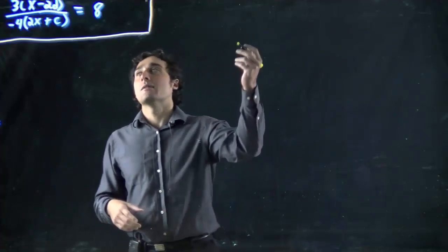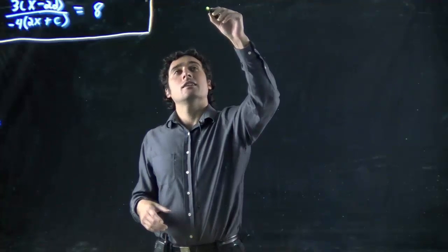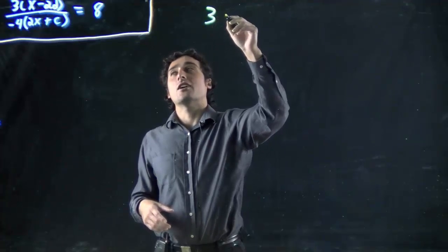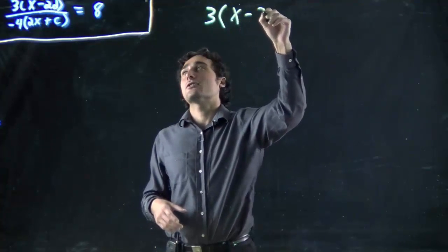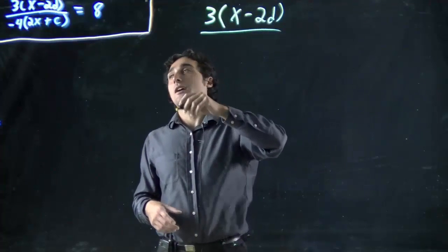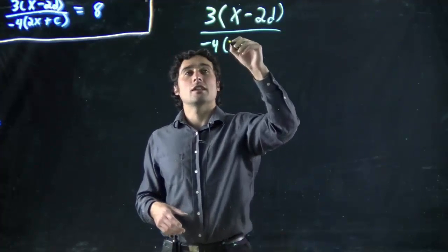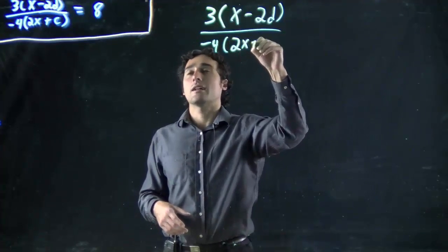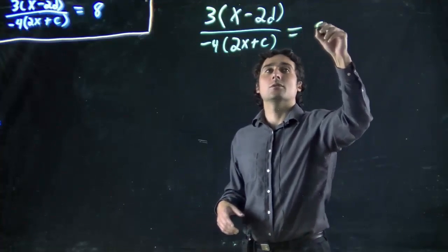Okay, so I'm always going to rewrite it. We've got a fraction on one side, so we've got 3 on the top. And 3 is times x minus 2d, which is in brackets. Then on the bottom, we have minus 4, which is multiplied by another bracketed term, which is in this case 2x plus c, and all of that is equal to 8.